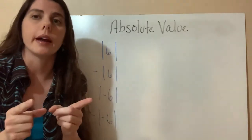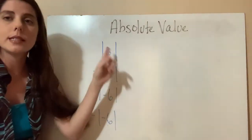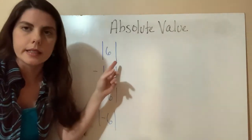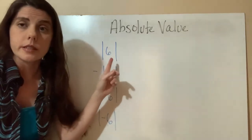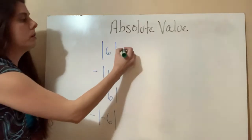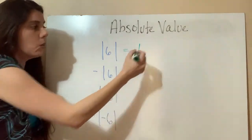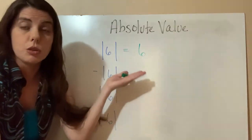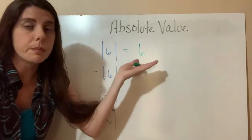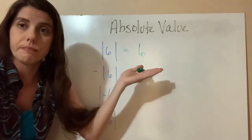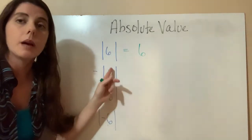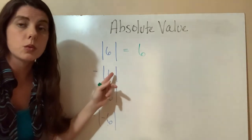Keeping that in mind, we have what's inside this absolute value symbol: six. So what's the distance this positive six is from zero? What is the absolute value of positive six? It's just six units away from zero. On our next example, we're going to take the absolute value of positive six, which is six.